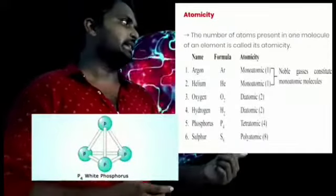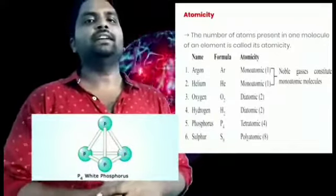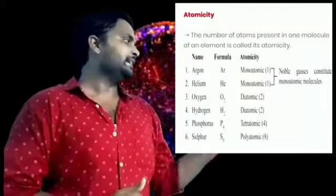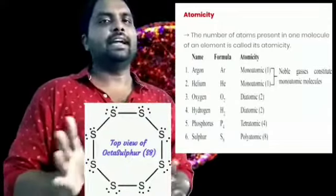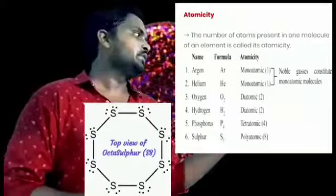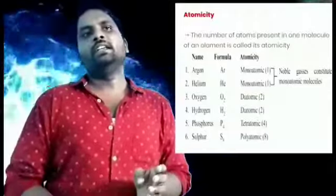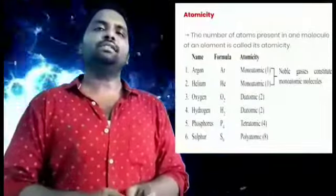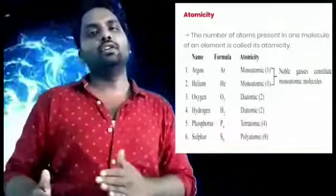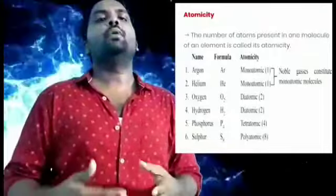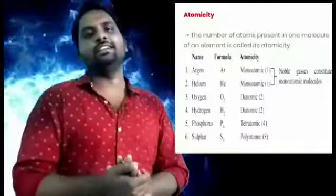Next is phosphorus. How many atoms are there in phosphorus? Four atoms — P, P, P, P — four phosphorus atoms. So phosphorus (P₄) is an example of a tetra atomic molecule. The last example is sulfur, symbol S. How many sulfurs are there? Eight atoms — eight sulfurs — so sulfur (S₈) is an example of a polyatomic molecule. If more than four atoms are there — five, six, seven, eight — we call it polyatomic.